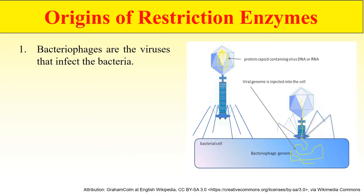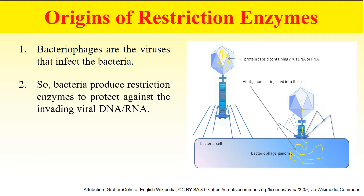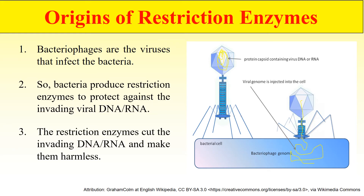How did these Restriction Enzymes evolve? There are certain specific kinds of viruses that infect bacteria — just as viruses infect us, there are viruses which can also infect bacteria, and these are called Bacteriophages. What the bacteria did was produce specific enzymes which ultimately cleave the DNA or RNA of these Bacteriophages, making their DNA harmless. In order to protect themselves, bacteria produce specific enzymes which cleave the Bacteriophage DNA and ultimately protect the bacteria. These are the Restriction Enzymes, and this is the reason for their evolution.